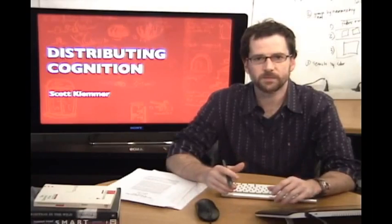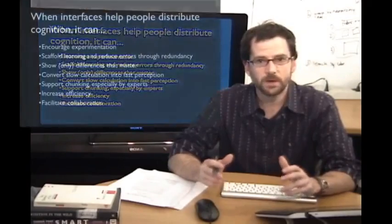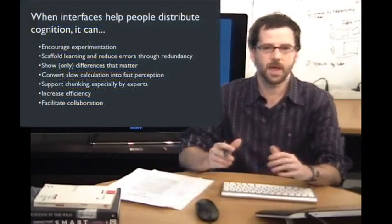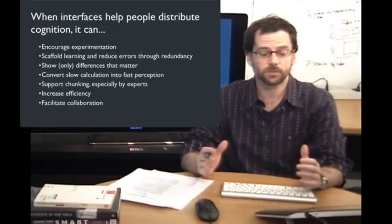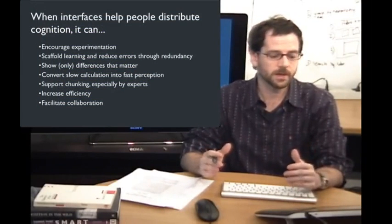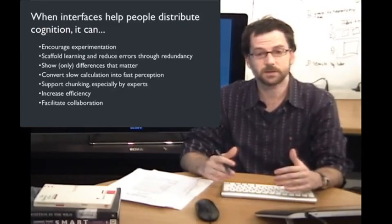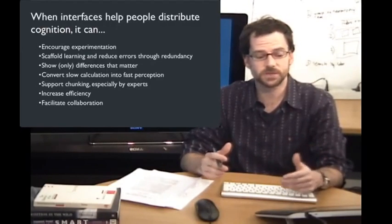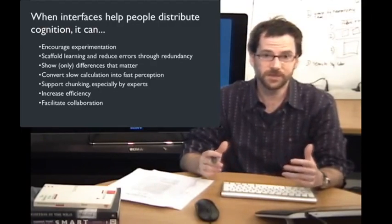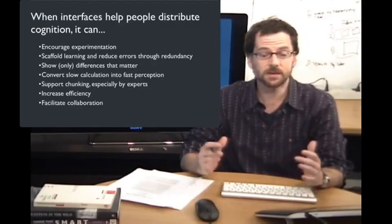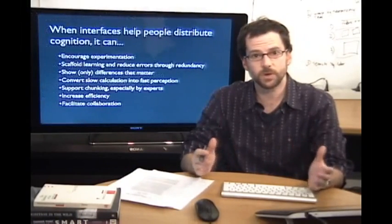There are several different ways that interfaces can help people think more fluidly by distributing cognition into artifacts in the world. When interfaces help people distribute cognition, it can encourage experimentation, scaffold learning and reduce errors through redundancy, show only the differences that matter, convert slow calculation into fast perception, support chunking especially by experts, increase efficiency of interactions, and facilitate collaboration. Let's go through these one at a time.